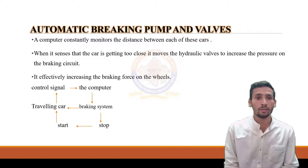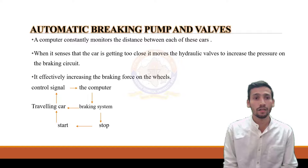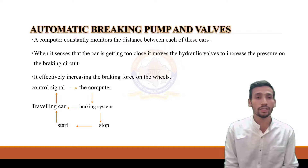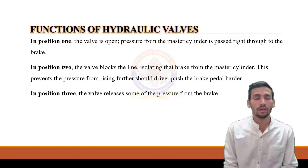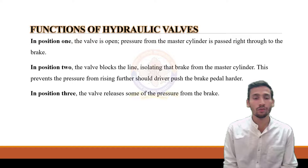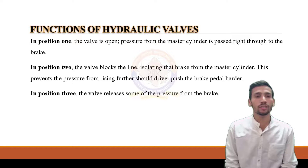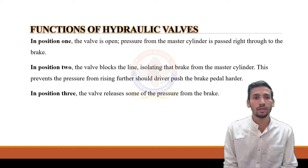The next slide is the Automatic Braking System. A computer constantly monitors the distance between each of the cars. When it senses a car is getting too close, it moves the hydraulic valves to increase the pressure on the braking circuit, effectively increasing the braking force on the wheels. In position 1, the wheel valve is open and pressure from the master cylinder passes through the brake. In position 2, the valve blocks the line, isolating the brake from the master cylinder, preventing pressure from rising further if the driver pushes the brake pedal harder. In position 3, the valve releases some of the pressure from the brake.